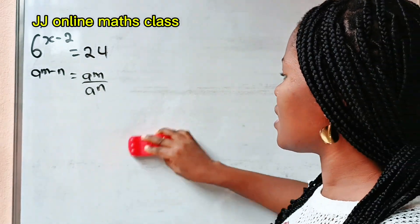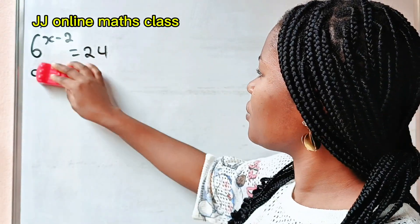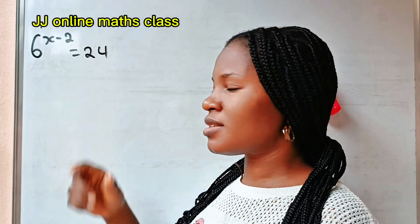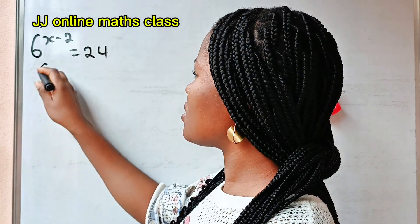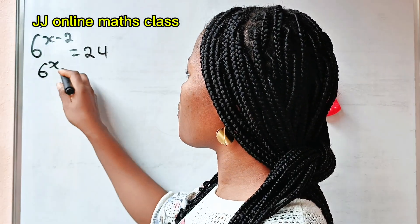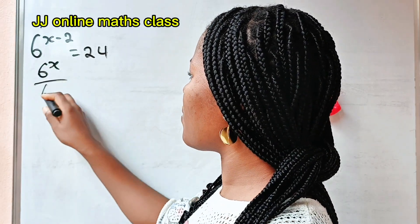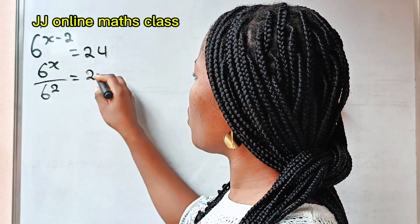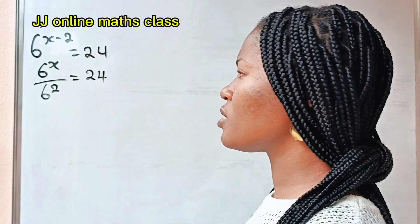So that means we can rewrite this as 6 to the power of x divided by 6 squared is equal to 24.